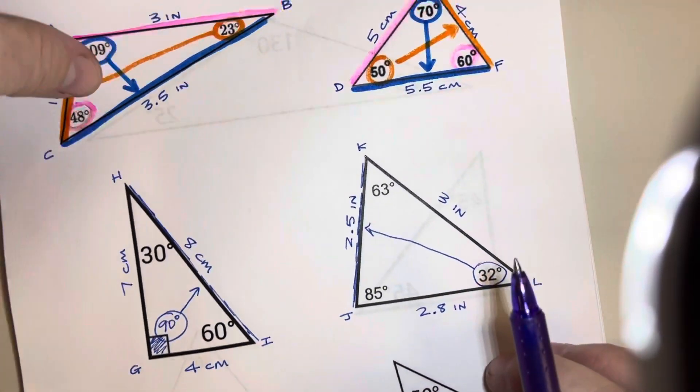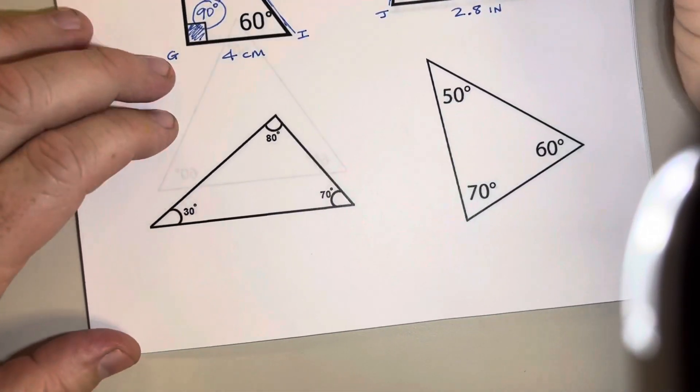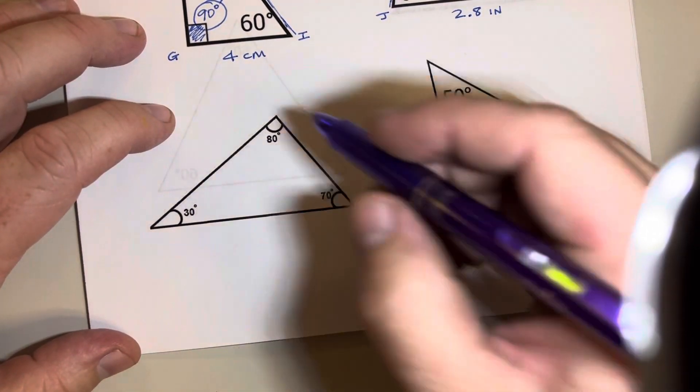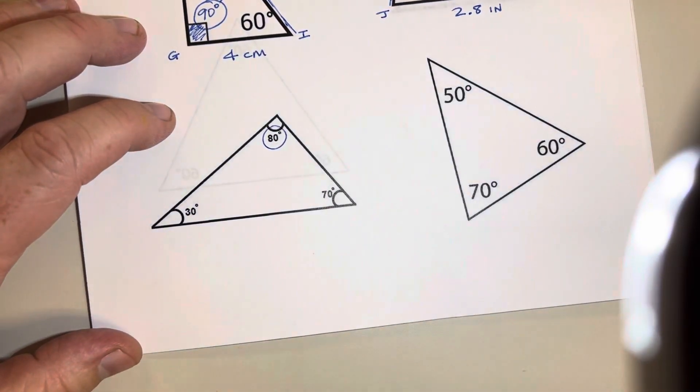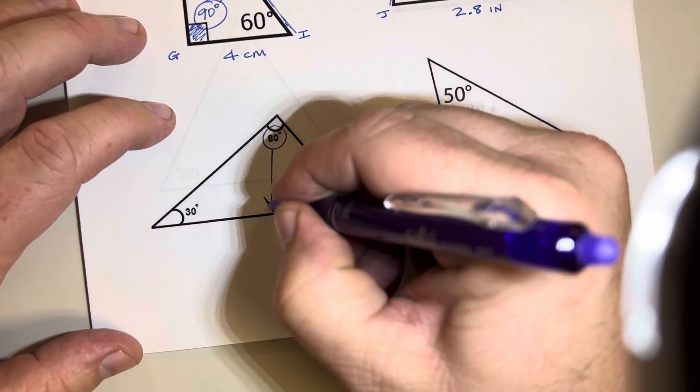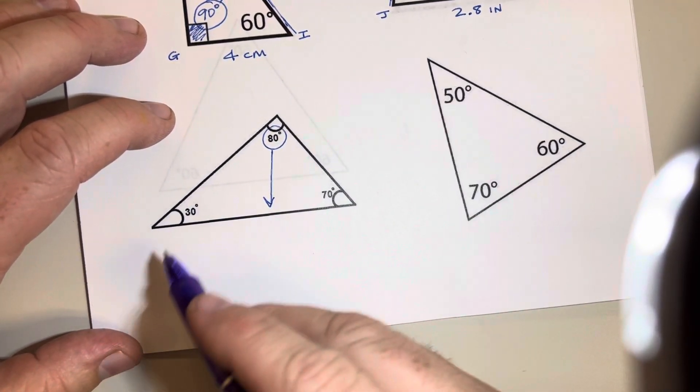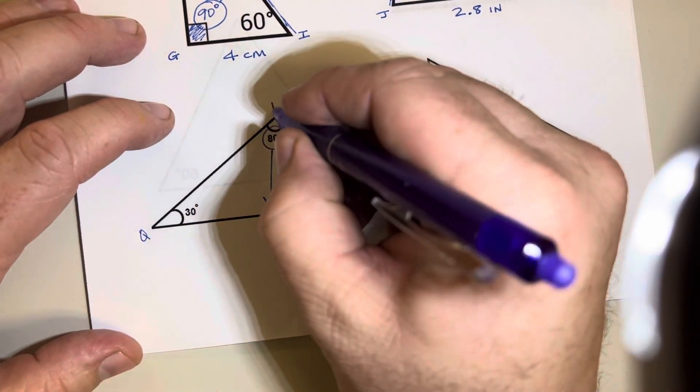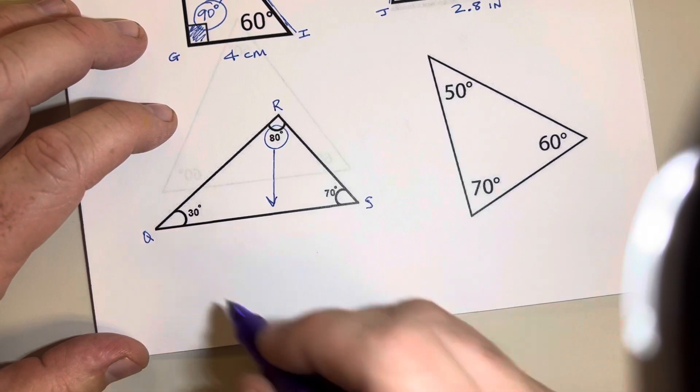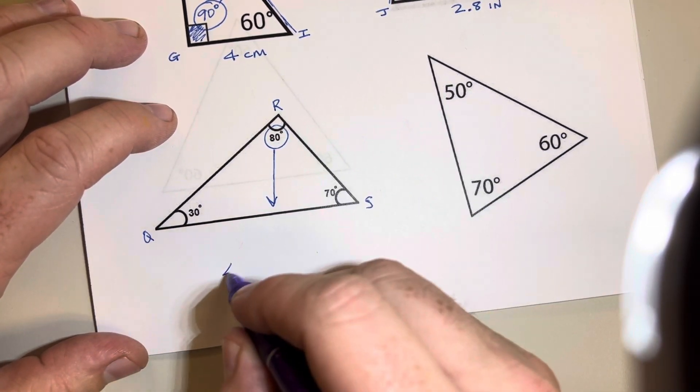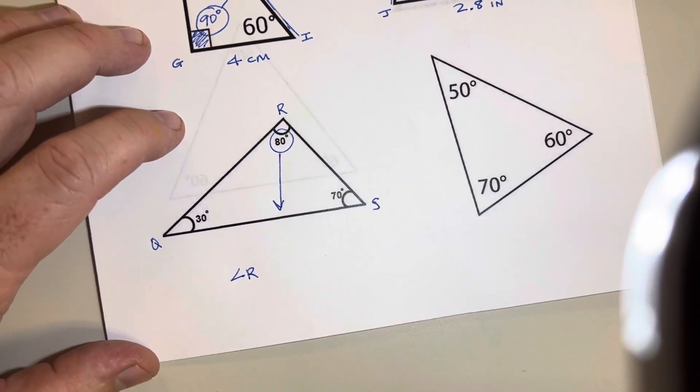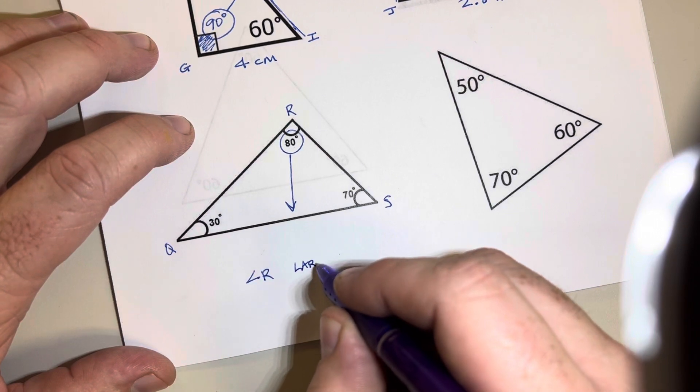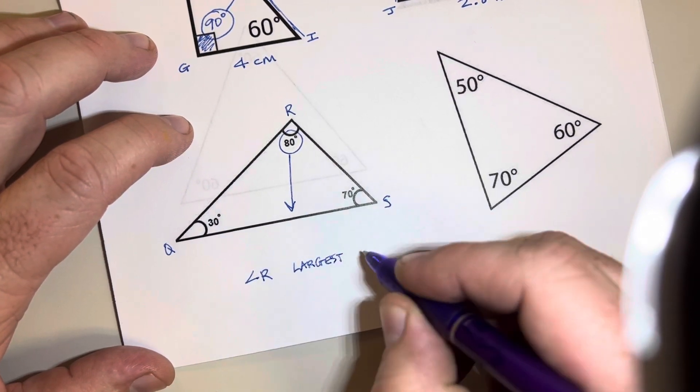And down in these last two down here, we could start to figure things out on our own. And we could say, alright, biggest angle, 80 degrees. So that means that this side over here, whatever this is called, this doesn't have any letters right now. But if we gave it letters like Q, R, and S, we could say that angle R is the largest angle.